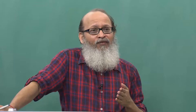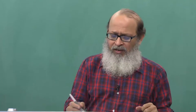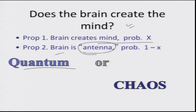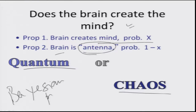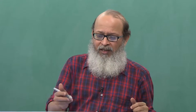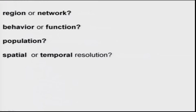There are four models of the brain: the quantum model from quantum physics, the chaos non-linear model, the Bayesian probability model, and others. What are we looking at? Are we looking at regions and networks, or at behavior and function? Are we looking at a population of neurons, or at spatial or temporal resolution? This is one layer when investigating.